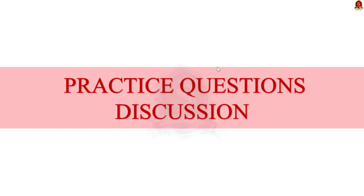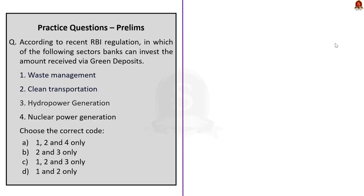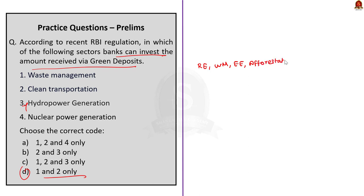Now we move to practice prelims question discussion. Today we discuss four questions. The first question asks about RBI regulations on sectors where banks can invest via green deposits. The correct answer is option D — one and two only. RBI has designated sectors including renewable energy (excluding hydropower), waste management, clean transportation, energy efficiency, and afforestation for investment via green deposit amounts. The second question asks: the name Porunai is the ancient name of which river? The answer is option C — Tamirabarani river.